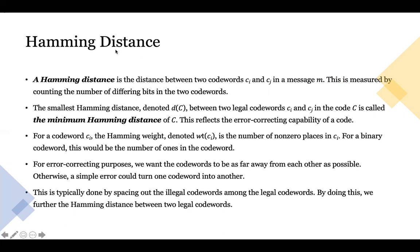Next is the Hamming distance concept. The distance between two code words is calculated by counting the number of bits that differ between c_i and c_j, and thus you get the Hamming distance. The smallest Hamming distance between two legal code words is called the minimum Hamming distance of C, which is also called the error correcting capability of a code. For a code word c_i, we also have the concept of Hamming weight, which is the number of non-zero places in c_i. Since we're going to be mainly working with binary codes, this will be the number of ones in the code word.